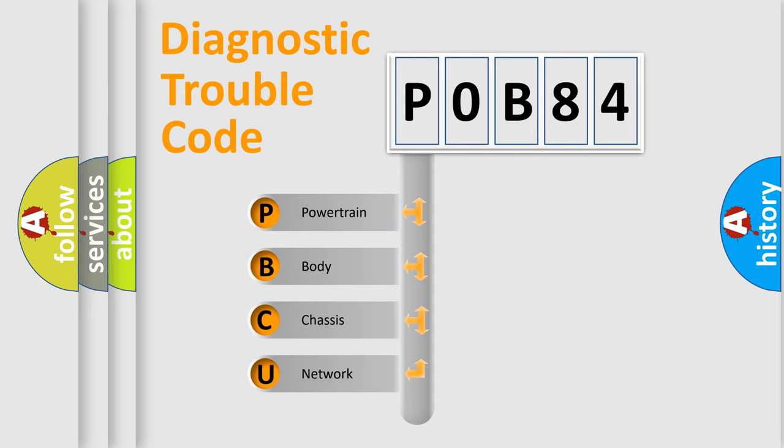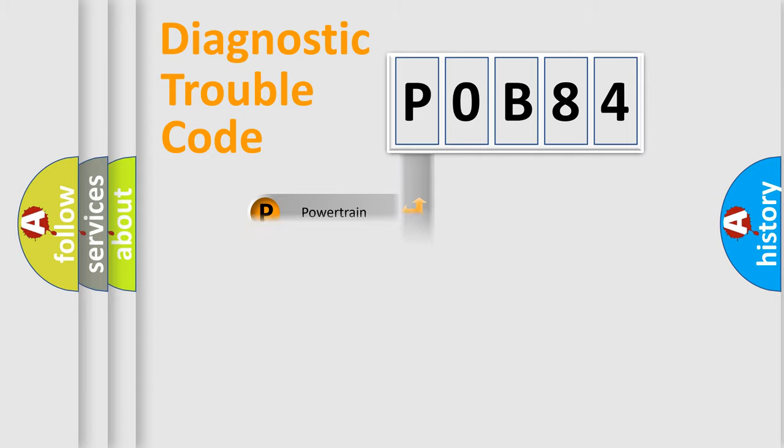We divide the electric system of automobile into the four basic units: Powertrain, Body, Chassis, and Network.